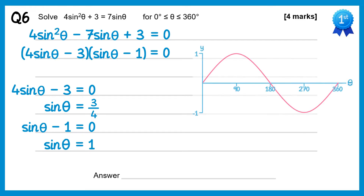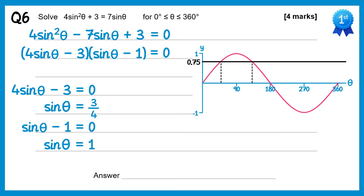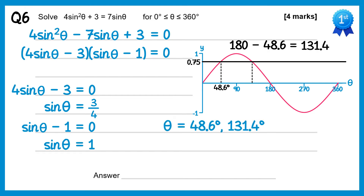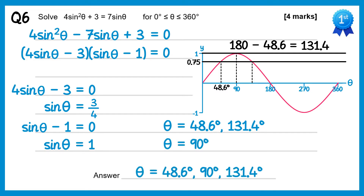Looking at the graph of sinθ: starting with sinθ equals 3/4, drawing a line at 3/4 gives two solutions. Inverse sin of 3/4 gives 48.6 degrees, and subtracting this from 180 gives 131.4 degrees. Then for sinθ equals 1, there's only one solution — the graph crosses at 90 degrees. So we have three solutions altogether: 48.6, 90 and 131.4 degrees.